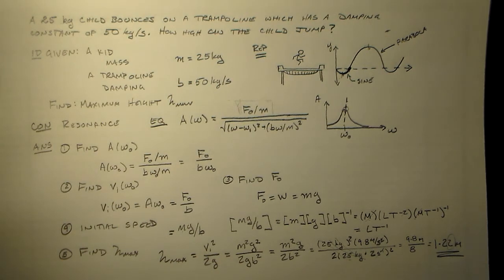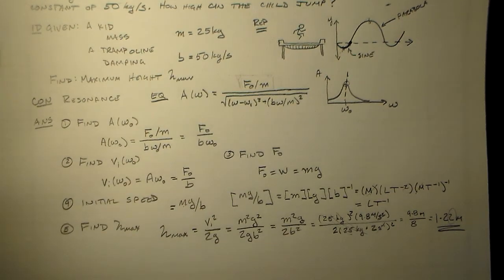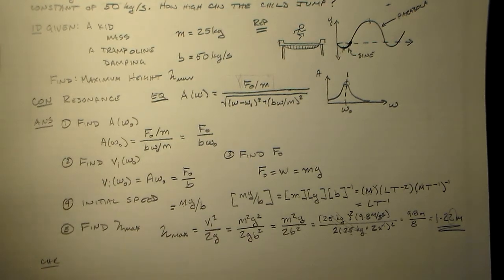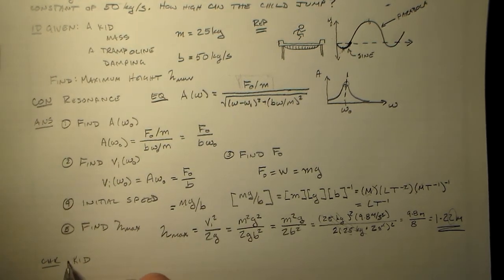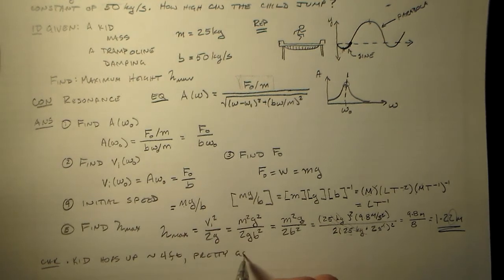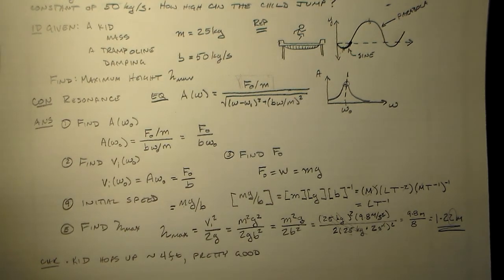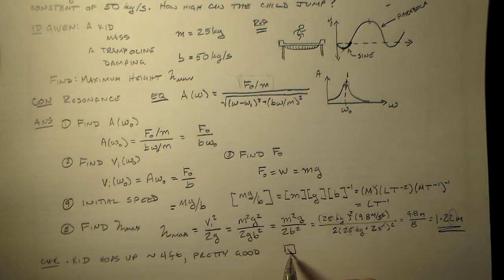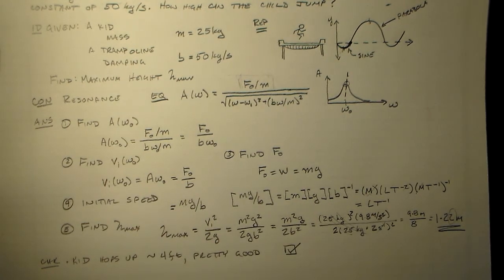So I mean, that's a pretty good job of it. It's a reasonable estimate. If we look at our checks, the kid hops up around 4 feet, which is pretty good. Still, 25 kilograms is a little kid, it's not a big kid, so we don't want our little kids going up 14 meters in height. They're not going to get to 14 meters, that's huge. So, about four feet, about a meter, meter and a half, that's all right. That's sort of what we expect sort of thing.